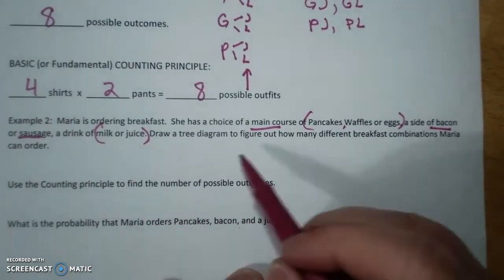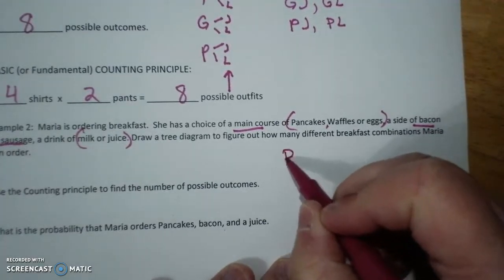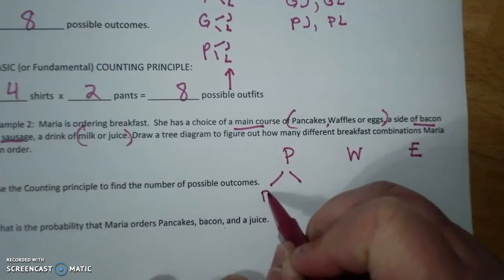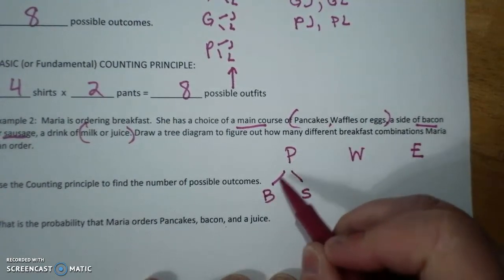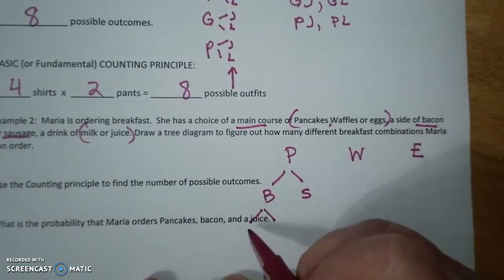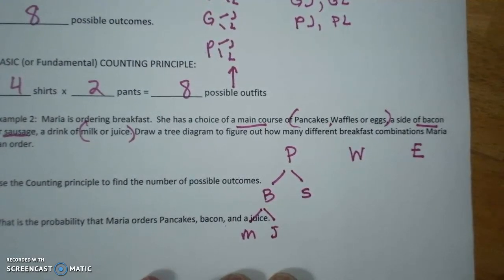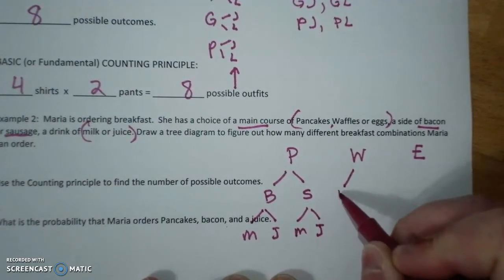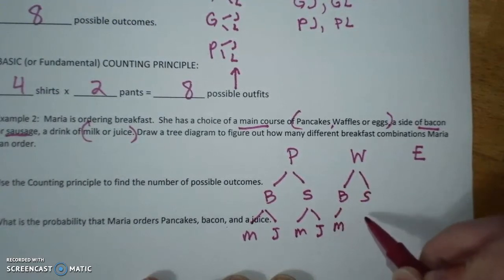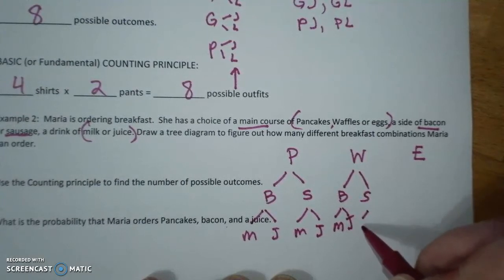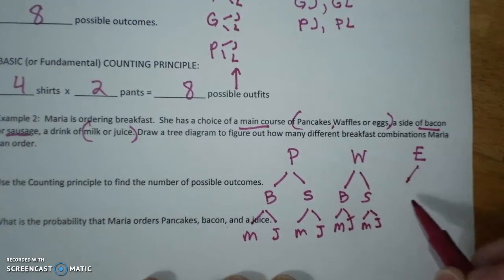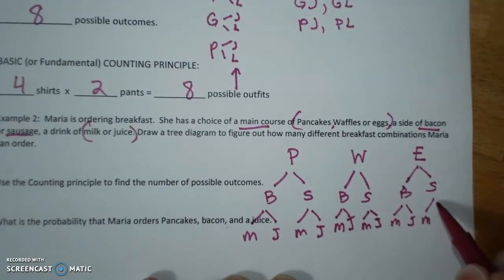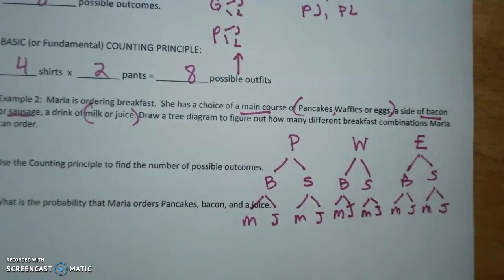Draw a tree diagram to figure out how many different breakfast combinations Marie can order. You can either do it vertically or horizontally. So, I'm going to do pancakes, waffles, or eggs. And if I do pancakes, I can either have bacon or sausage. And if I have pancakes and bacon, I can have milk or juice. Pancakes, sausage, milk, or juice. Waffles and bacon, waffles and sausages, bacon's milk or juice. Waffles, sausages, milk or juice. Eggs, I can have bacon or sausage, milk or juice. Notice each time it's branching out. That's why it's called a tree.